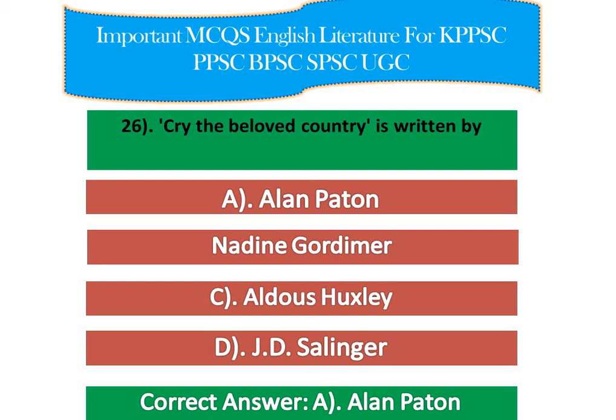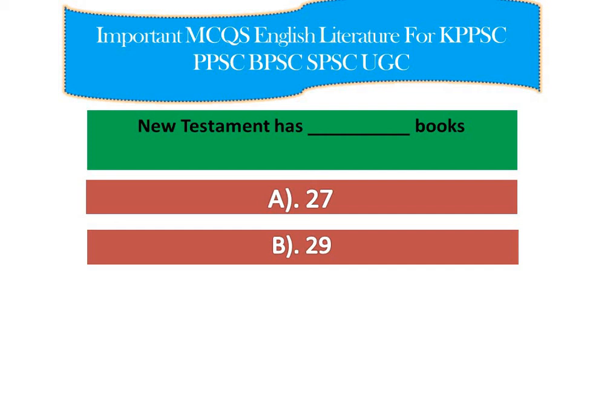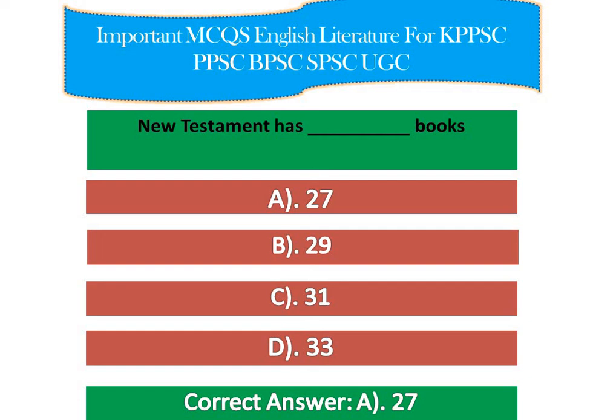Question number two: The New Testament has how many books? Options: A) 27, B) 29, C) 31, and D) 33. The right answer is option A — 27. The New Testament is the second part of the Christian Bible, written originally in Greek, that tells the story of the life of Jesus and his followers.